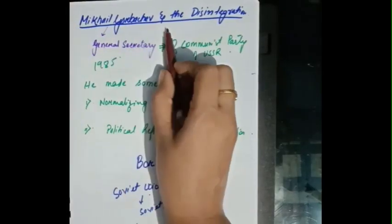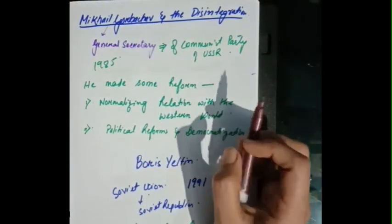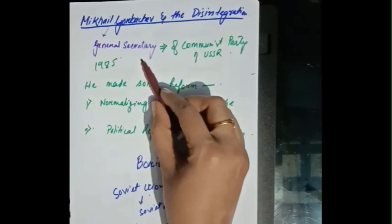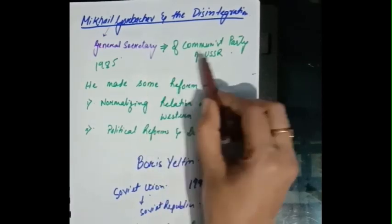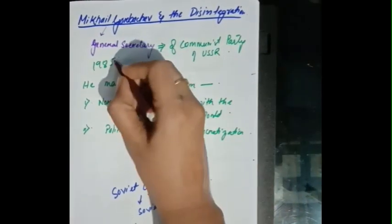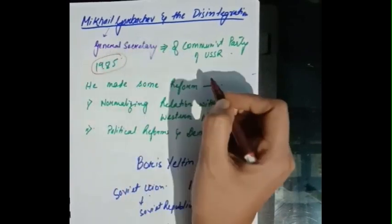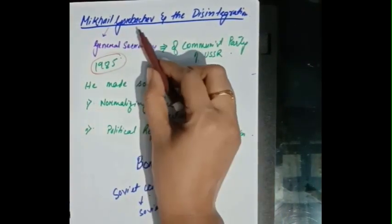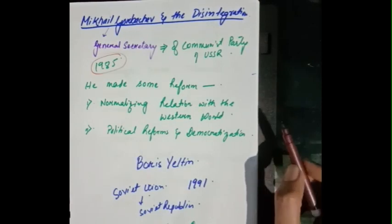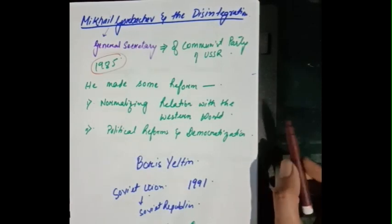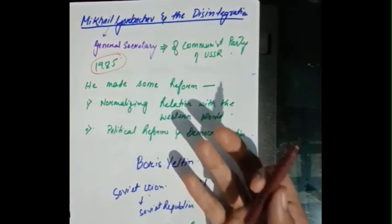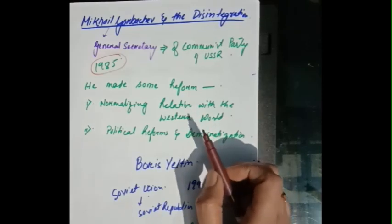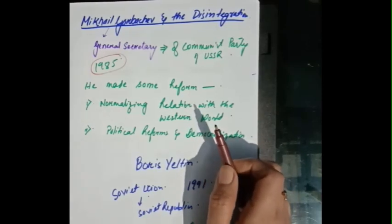Mikhail Gorbachev became the General Secretary of the Communist Party of the USSR in 1985. By the time he took office, the people of the USSR were already facing many crises due to lack of food, unemployment, and many more problems.